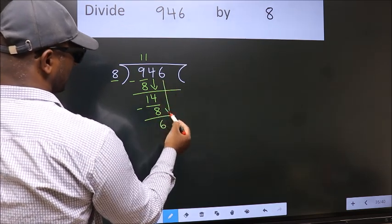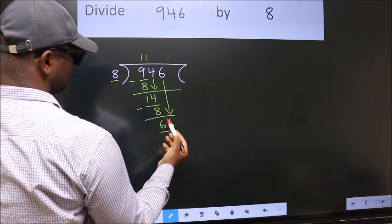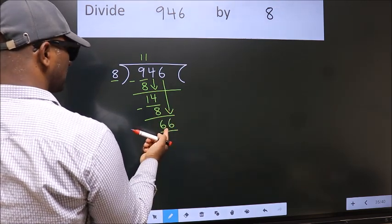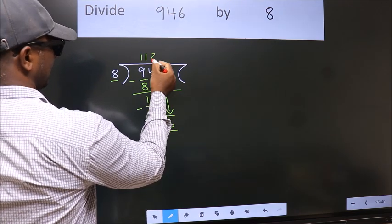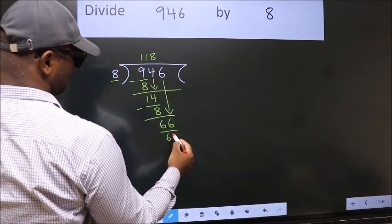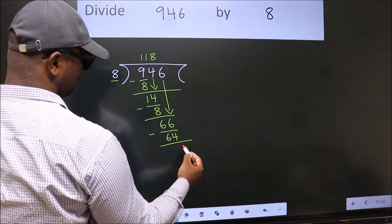After this, bring down the beside number. So, 6 down. So, 66. A number close to 66 in 8 table is 8 8s, 64. Now, we subtract. We get 2.